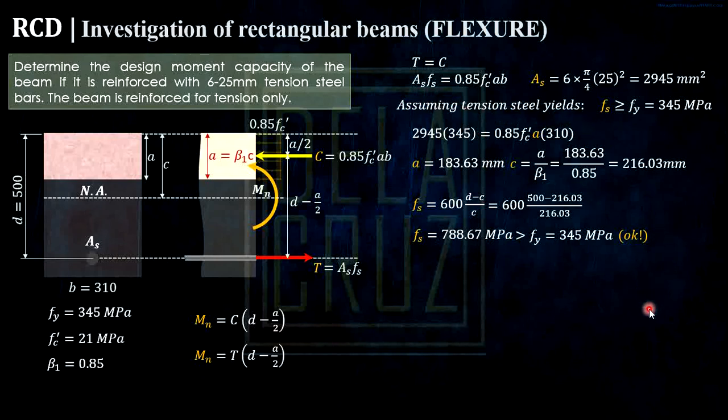Let's proceed. Assuming the tension still yields, that is okay. We can solve our Mn by T times D minus A over 2. Substitute and our Mn is 414.76 kNm. Now the question here is the reduction factor.